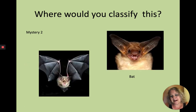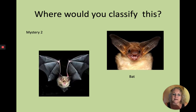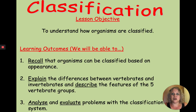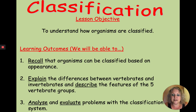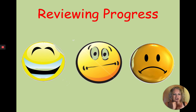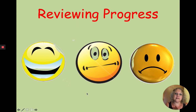What about a bat? It flies, but it hasn't got feathers — it's got fur. What would you classify it as? That brings us to the end of the lesson. Hopefully you can now recall that organisms are classified based on their appearance, explain the difference between vertebrates and invertebrates, describe the five vertebrate groups, and think about problems with the classification system. Well done — maybe you need to go back over it, or maybe you've got it. Excellent work today.